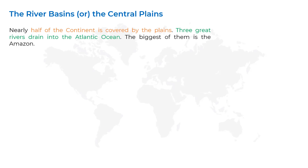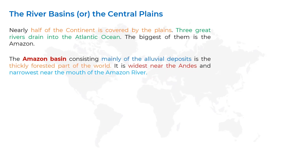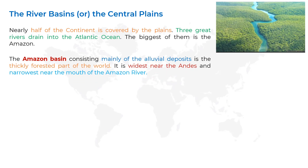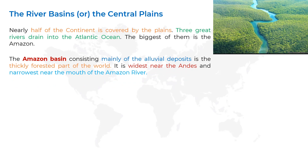The Amazon Basin, consisting mainly of alluvial deposits, is the most thickly forested part of the world. It is widest near the Andes and narrowest near the mouth of the Amazon River. Alluvial deposits are material deposited by rivers, consisting of silt, sand, clay, and gravel, as well as organic matter, making the region very fertile.